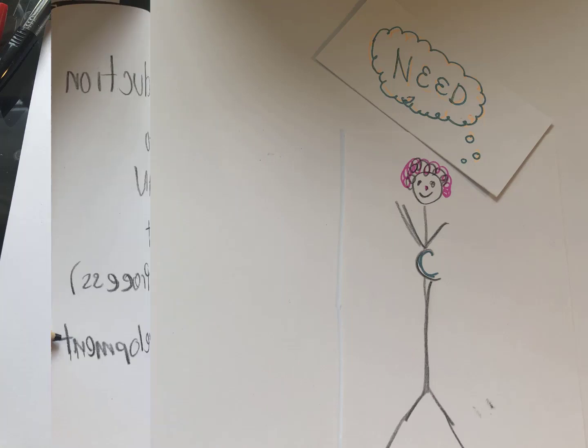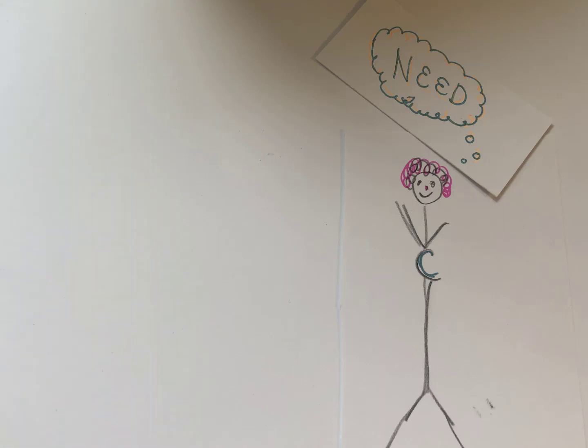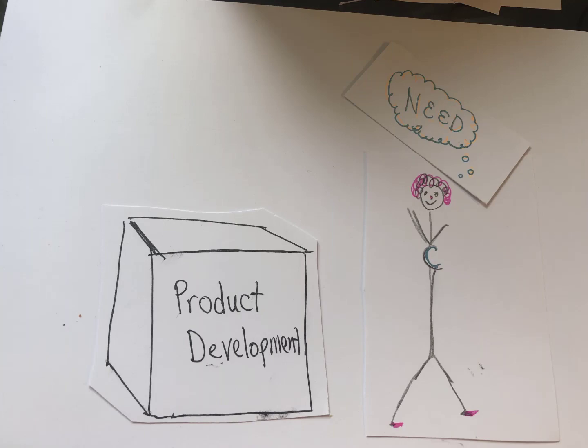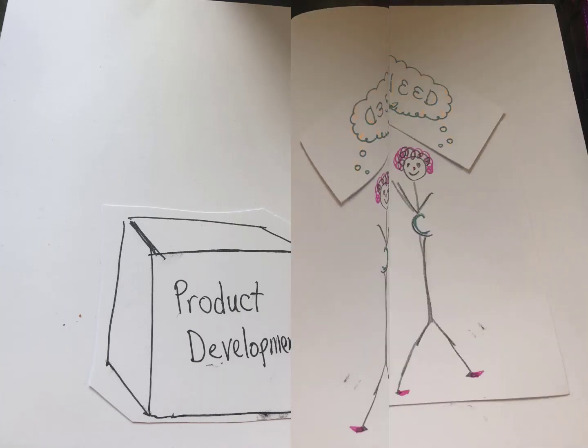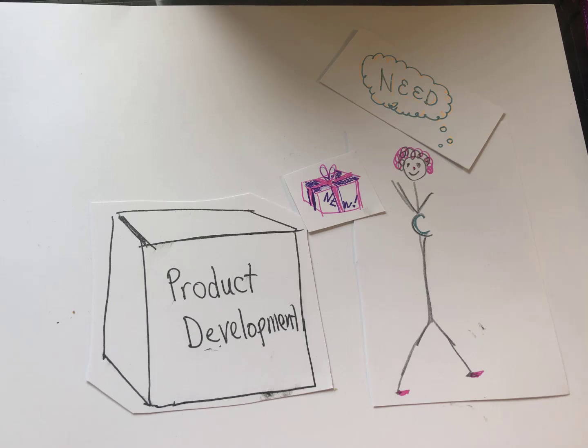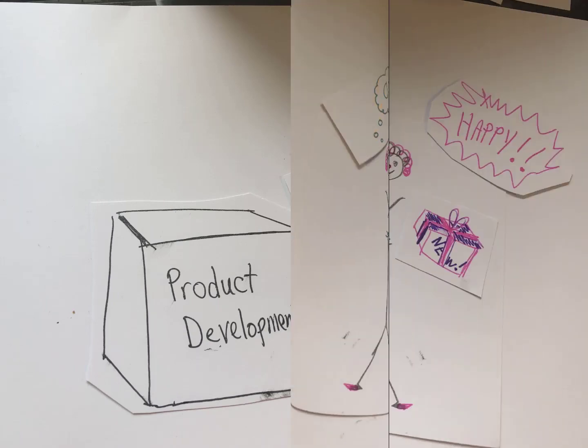Introduction to Lean Product and Process Development. Somewhere out there, there is a customer. And that customer wants or needs a new product. Or maybe you have an idea for a new product and you'd like to get it to the customer. And you have a product development organization — the people who are actually going to develop that new product so it can be delivered to the customer.